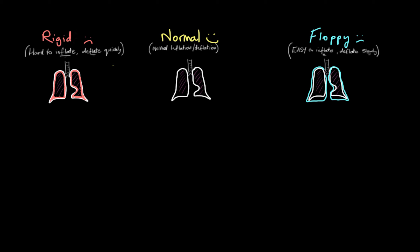Then we look at a rigid set of lungs — more stiff and difficult to open. This might be someone with pulmonary fibrosis or interstitial lung disease, where thickening in the pleura and parenchyma makes the lungs very hard to inflate, though they deflate quickly due to their recoil. This is what we call a decrease in compliance: the lungs are less compliant to the ventilator trying to open them.